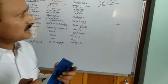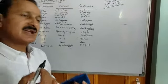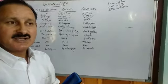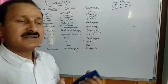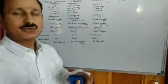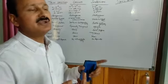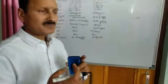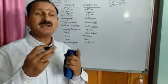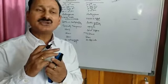Dear students, in daily life we find certain mixtures. We can get mixtures by combining two components, sometimes three components, and we get different solutions. Sometimes we call them as true solutions, sometimes we call them as suspensions, and sometimes we may call them as colloids.